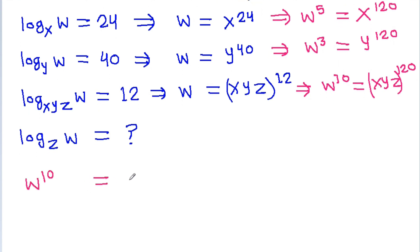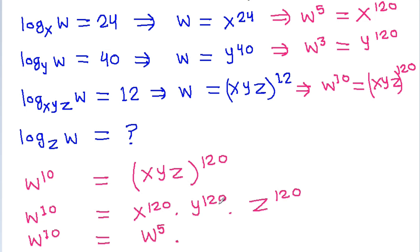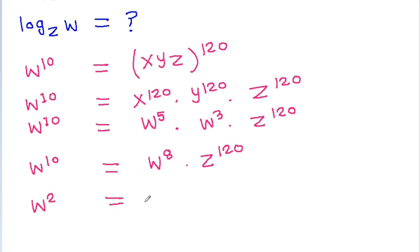We have w to the power 10 is equal to xyg to the power 120, which expands to x to the power 120 times y to the power 120 times g to the power 120. Now substituting: x to the power 120 is w to the power 5, and y to the power 120 is w cubed. So w to the power 10 divided by w to the power 8 is w squared, which equals g to the power 120, giving us w equal to g to the power 60.